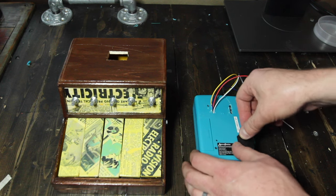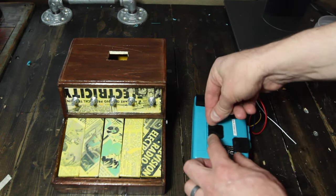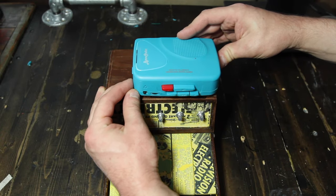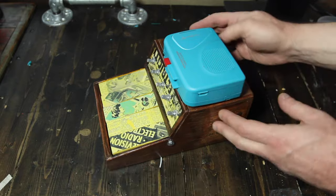And now connect the player to the case. I use Velcro for this. For easiest access to the buttons and the power port, you want to position the player in the front right, as I've done here.